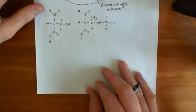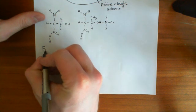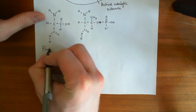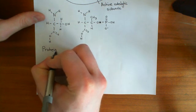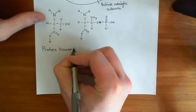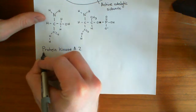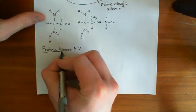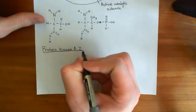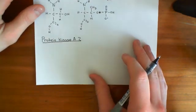Now what we're going to have a look at is Protein Kinase A2. This is basically another protein kinase A, but this time the regulatory subunit is slightly different, and in this case the regulatory subunit will actually be bound to a target.